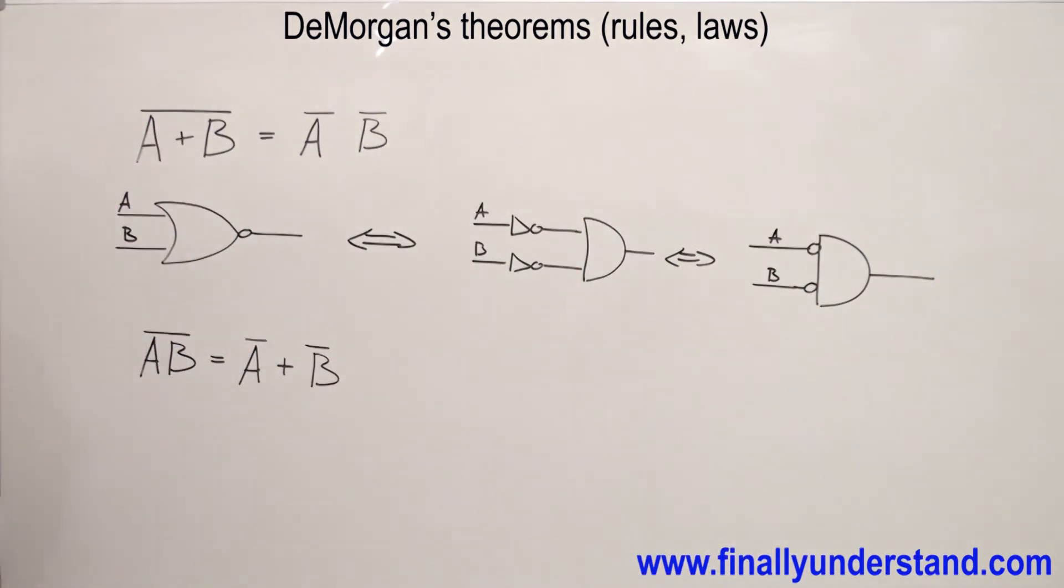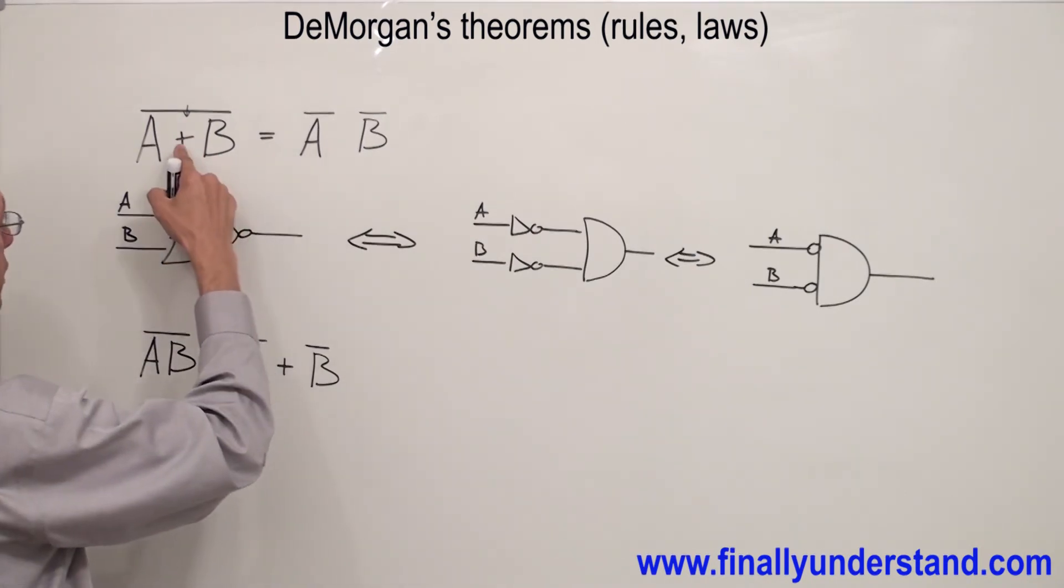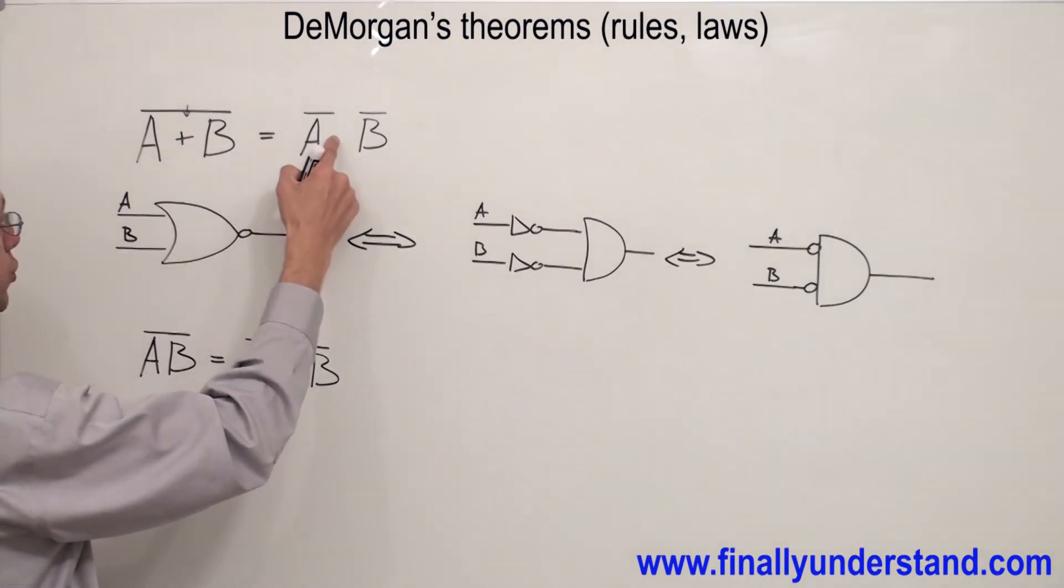I also explained this for students in this way that anytime we have two variables and I want to cut the bar, I'm supposed to change the sign. So anytime you cut the bar between two variables or two terms, you have to change the sign. So as you can see, the sign is changed from OR to AND, and the bar is cut in half.